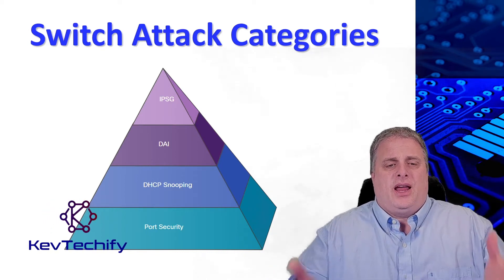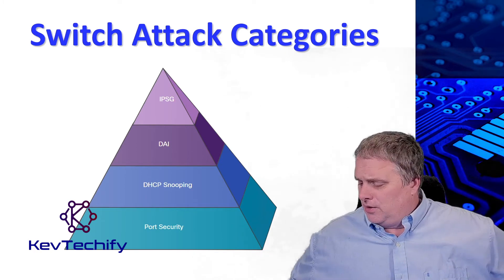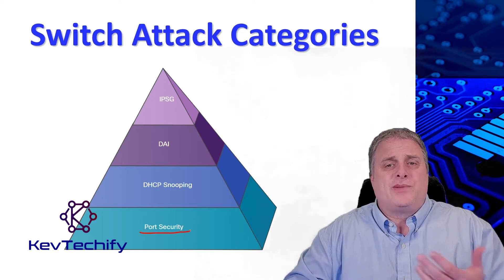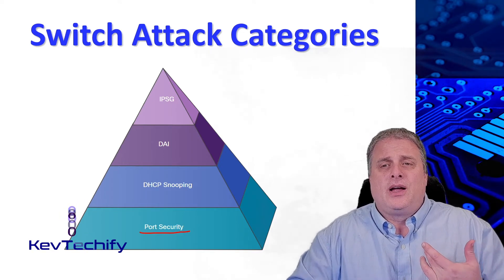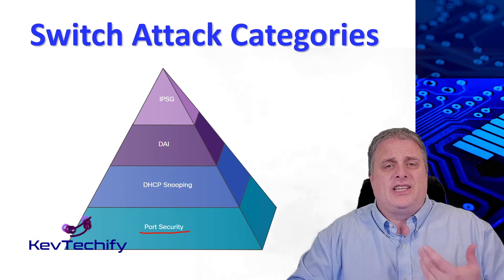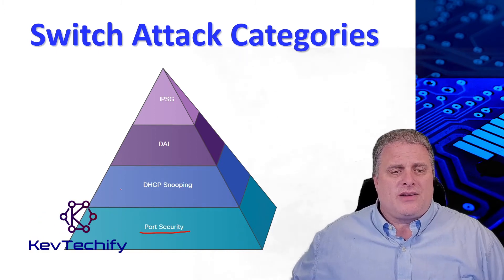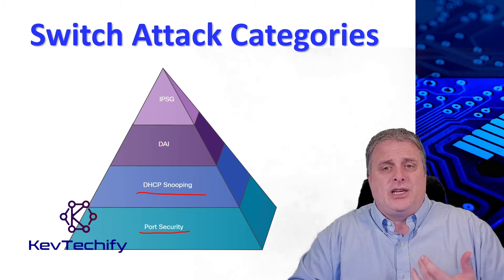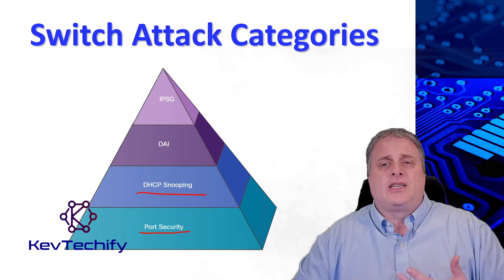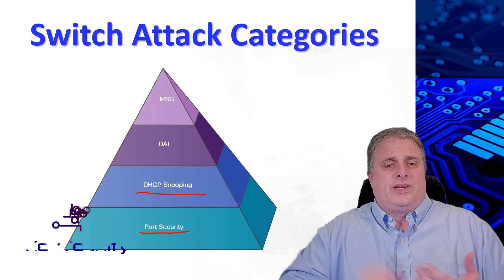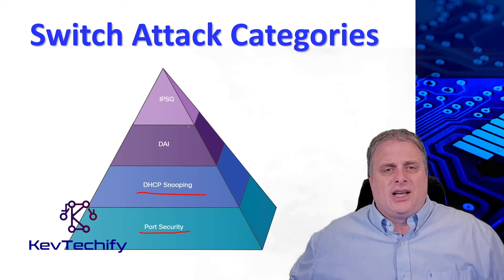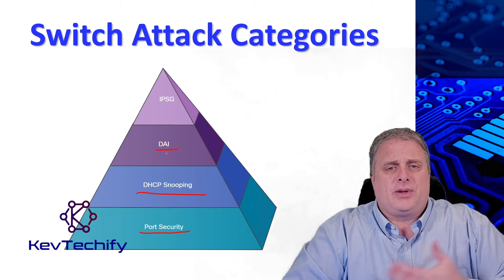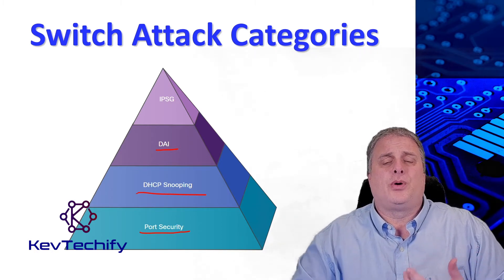We have this pyramid, and it starts at the bottom with the base. The first item for port is port security. Port security prevents many types of attacks including MAC table overflow attacks and DHCP starvation attacks. Then we have DHCP snooping, which prevents DHCP starvation and DHCP spoofing attacks by rogue DHCP servers. Then we have dynamic ARP inspection, which prevents ARP spoofing and ARP poisoning attacks.